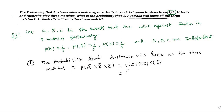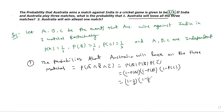What is A bar? 1 minus P of A. What is B bar? 1 minus P of B. What is P of C bar? 1 minus P of C. Substituting values for A, B, C: 1 minus 1 by 3, all are equal — 1 minus 1 by 3, into 1 minus 1 by 3, which is 2 by 3 into 2 by 3 into 2 by 3.